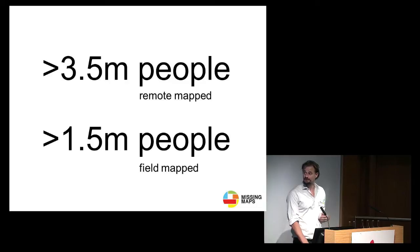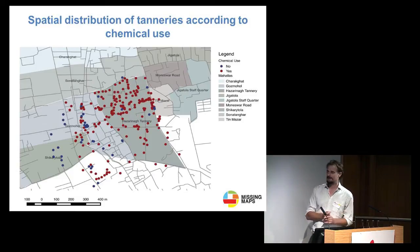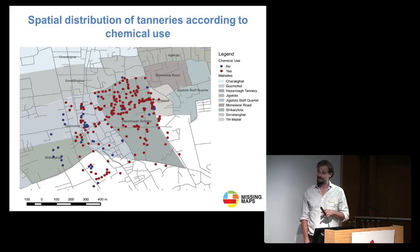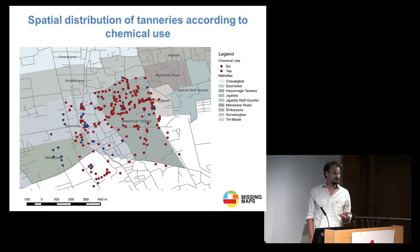Some practical applications. This is Hazaribagh in Dhaka, Bangladesh — one of the most toxic places on Earth. MSF conducted an occupational health survey, based on data gathered by the Missing Maps project, into chemical use in tanneries. This data is informing operational decision making. Without the base mapping data that the survey was based upon, the epidemiologist who conducted it said it would have been impossible to survey exhaustively — meaning every tannery — so the resulting data would have been incomplete.